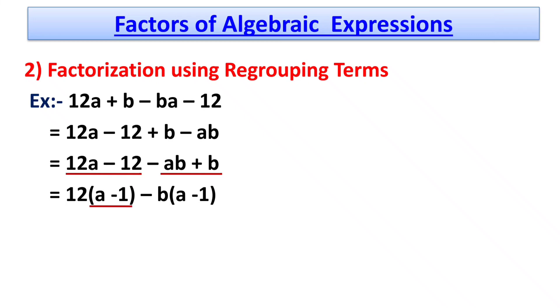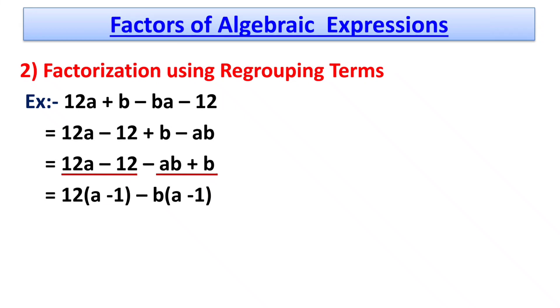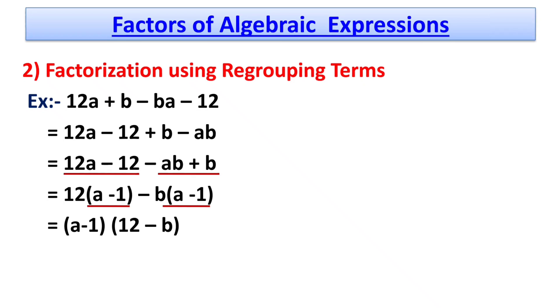Now, (a - 1) is common. So we have (a - 1)(12 - b). These are the factors of the given problem. This is the method of factorization using regrouping terms.